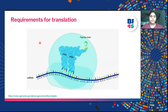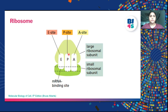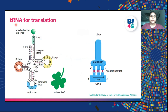For translation, you need a ribosome, tRNAs and mRNA. The ribosome has three types of sites: the E site (mRNA binding site), the P site and the A site, with P and A sites being tRNA binding sites. tRNA, or transfer RNA, is shaped like a clover leaf and has an anticodon — a 3 base-pair sequence that binds to the codons on the mRNA.